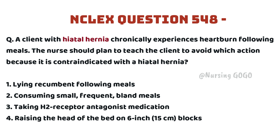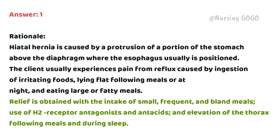The answer is one. Hiatal hernia is caused by a protrusion of a portion of the stomach above the diaphragm where the esophagus usually is positioned. The client usually experiences pain from reflux caused by ingestion of irritating foods, lying flat following meals or at night, and eating large or fatty meals. Relief is obtained with the intake of small frequent bland meals, use of H2 receptor antagonists and antacids, and elevation of the thorax following meals and during sleep.